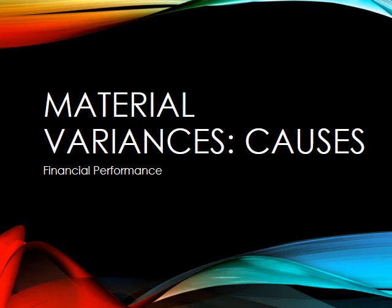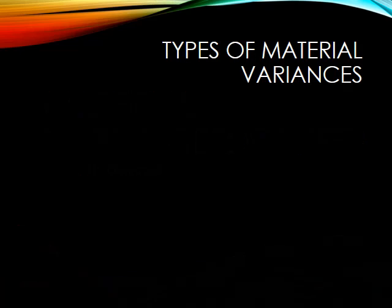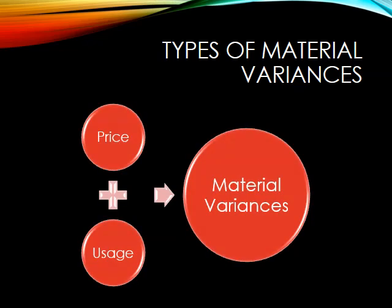In this session we shall look at why material variances arise. When we look at our materials variances they can be split into two types. There are price variances, which arise because the actual price of the materials is different from the standard price of materials. And there are usage variances, where the standard amount of materials used for one unit is different from the actual amount of materials used for that same unit.